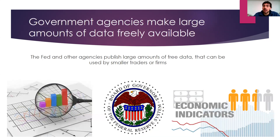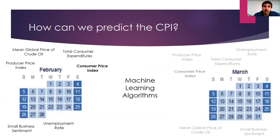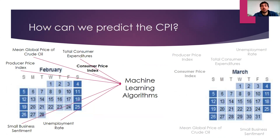There's a lot of data out there made readily available by government agencies, especially the FRED, and those economic indicators are very insightful as to what's going on in the current economy. So how can we predict the CPI using that? For any given month we have a number of indicators that are available, including how much people are spending, the price of oil, and the Producer Price Index. What we can do is take all those values, plug them into a machine learning algorithm, and use that to predict next month's Consumer Price Index — basically, based on current market conditions, can a machine learning algorithm predict the CPI?